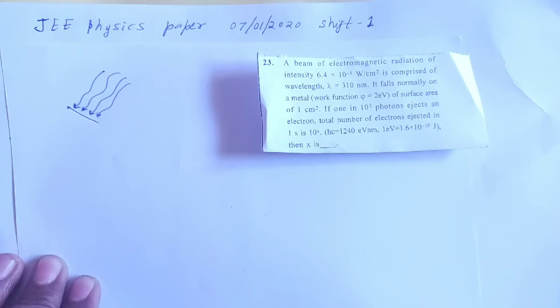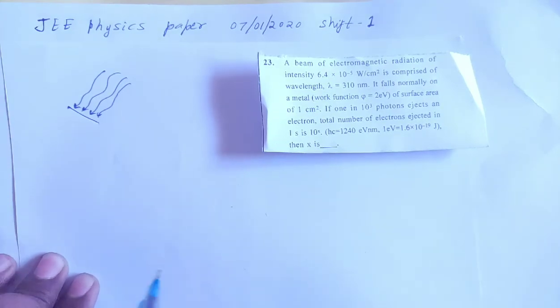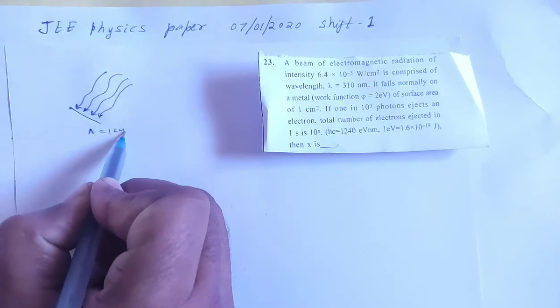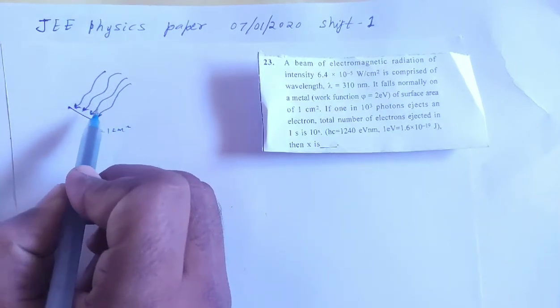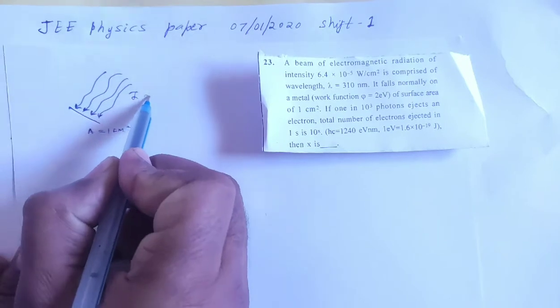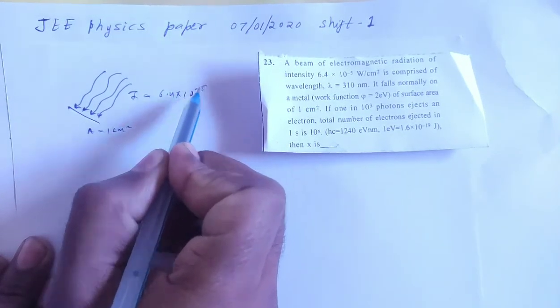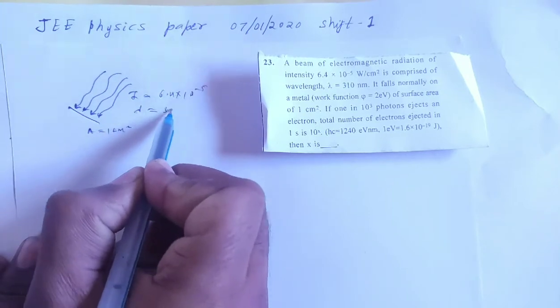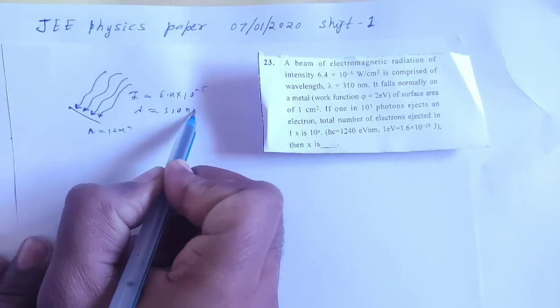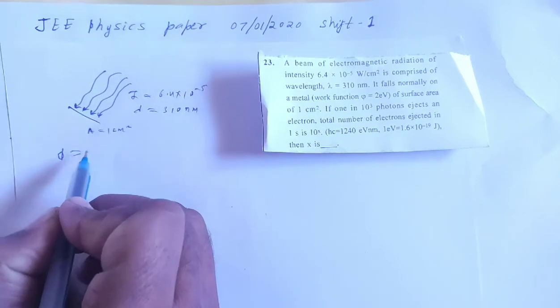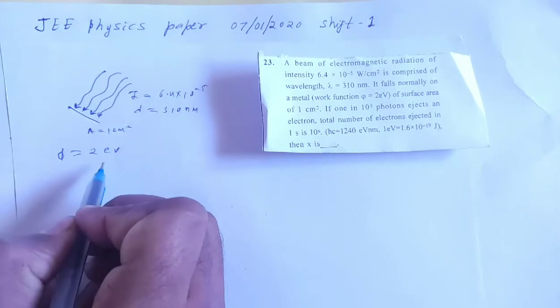Okay, so we have a metal surface which has area 1 centimeter square, and the light incident has intensity 6.4 × 10⁻⁵ and wavelength is 310 nanometer, and the work function given is 2 electron volt.